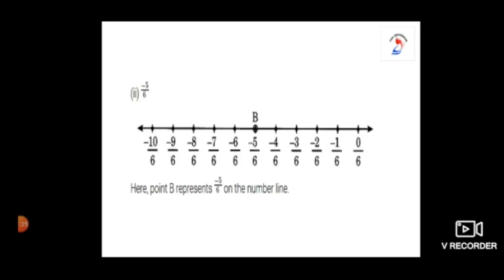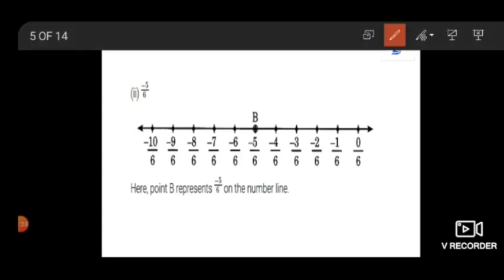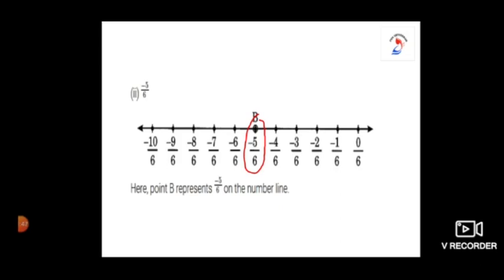The number minus 5 by 6 will be present in between minus 4 by 6 and minus 6 by 6. This is the way to represent the number on the number line. Look at all the denominators — all the denominators are 6. This is one way for representing the numbers on the number line.